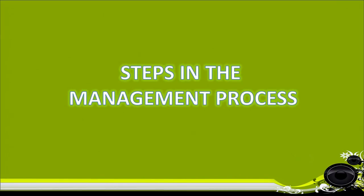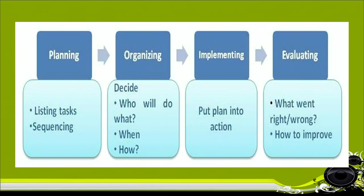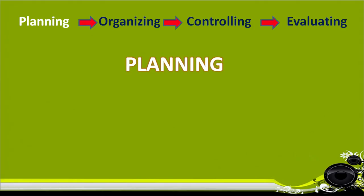Management is a process, so now we will understand the steps in the management process. There are four steps: number one, planning; number two, organizing; number three, controlling; and number four, evaluating. Planning includes listing of tasks and sequencing them. Organizing means deciding who will do what, when and how. Implementing means putting the plan into action — actually doing the work. And evaluating means understanding what went wrong or right and how to improve.